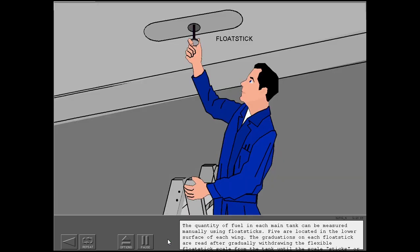The quantity of fuel in each main tank can be measured manually using float sticks. Five are located in the lower surface of each wing. The graduations on each float stick are read after gradually withdrawing the flexible float stick from the tank until the scale sticks or hangs up. The fuel quantity is determined by using the fuel quantity data for ground attitudes document with the float stick readings and airplane attitude data. There is no manual method of measuring the quantity of fuel in the center tank.